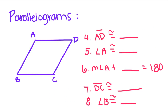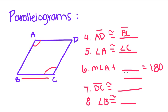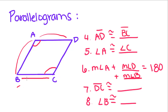AD is congruent to BC. Angle A is congruent to the angle opposite, which is angle C. The measure of angle A plus what equals 180? There are actually two different angles that could fit, since consecutive angles are supplementary. So A and D are consecutive, and A and B are consecutive. Therefore, angle A plus angle D equals 180, or angle A plus angle B equals 180. DC is congruent to the side opposite it, which is AB. Angle B is congruent to the angle opposite, which is angle D.